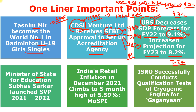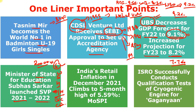Minister of State for Education Subhash Sarkar launched SVP 2021–2022. SVP stands for Swachh Vidyalaya Puraskar, underlining the importance of water, sanitation, and hygiene. Schools will be assessed through an online portal and mobile application in six subcategories: water, sanitation, hand wash, operation and maintenance, behavior change, and capacity building. The six subcategory winners will receive a prize money of 20,000 rupees per school. The Swachh Vidyalaya Puraskar was first introduced in 2016–17 under the Department of School Education and Literacy.